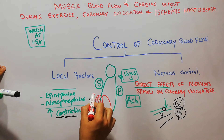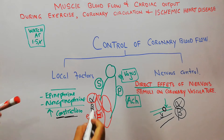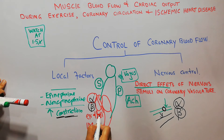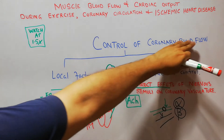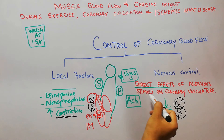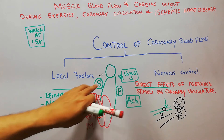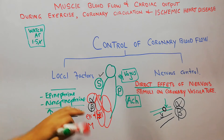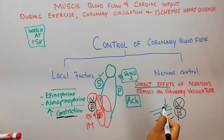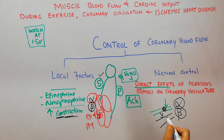Alpha receptors are more prominent — their number and proportion is greater — on the epicardial coronary vessels. Beta receptors are more abundant in the intramuscular portion of the coronary vessels. So when discussing the direct effects of nervous stimuli on coronary vasculature: sympathetic nerves secreting epinephrine and norepinephrine will cause constriction of the epicardial vessels due to alpha receptors, and dilation of the intramuscular vessels due to beta receptors.